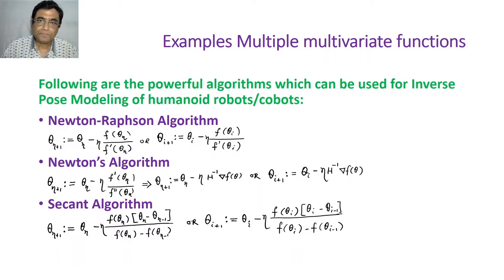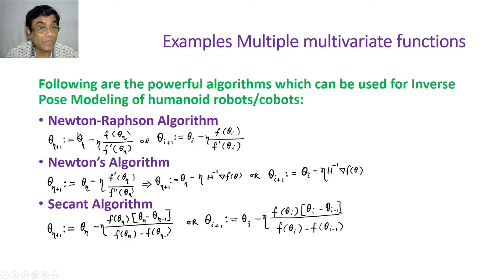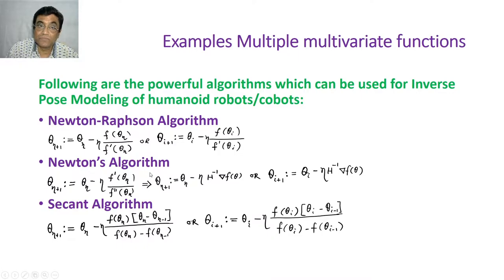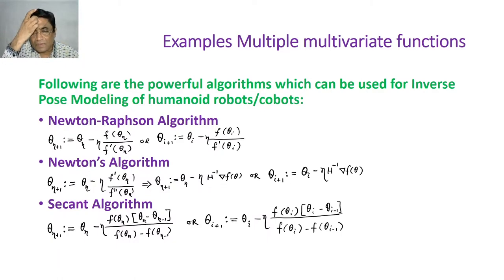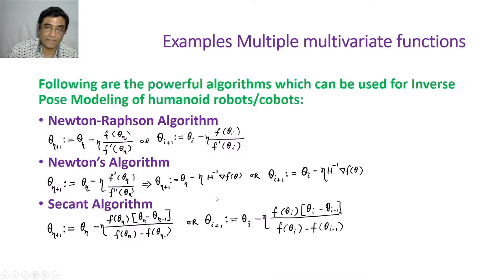Here we would like to recap. You have learned three powerful numerical methods. One is the Newton-Raphson algorithm — this gives delta theta. Another is Newton's algorithm, which will guarantee that when the Hessian matrix is negative semi-definite, the solutions you are getting are optimal solutions — that is, you are able to maximize the function. It's a calculus method. You are able to maximize your function with those theta values.